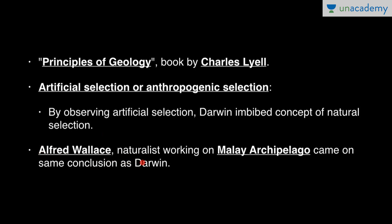Alfred Wallace, a naturalist working on the Malay Archipelago — present-day Indonesia — came to the same conclusion as Darwin. Together, the Wallace-Darwin theory is called the theory of natural selection, which will be dealt with in detail in our next lesson.